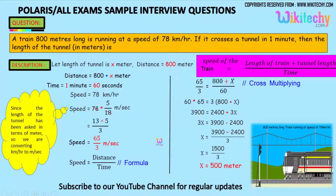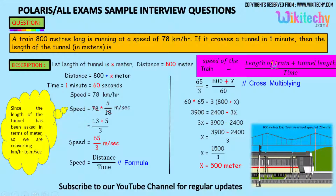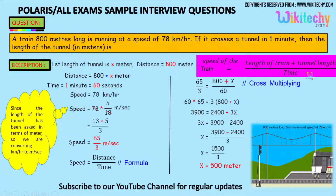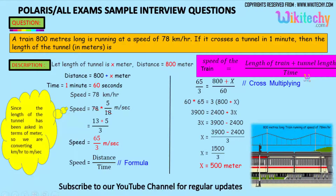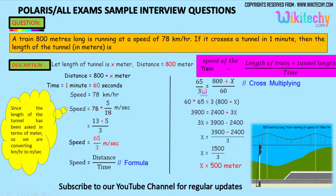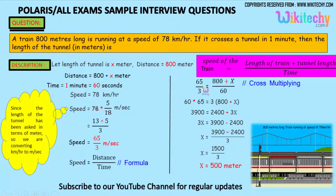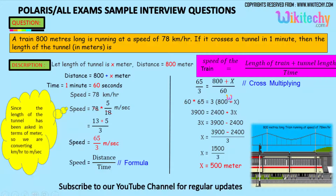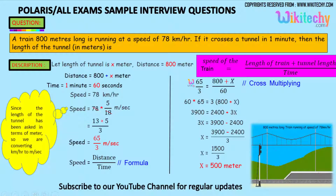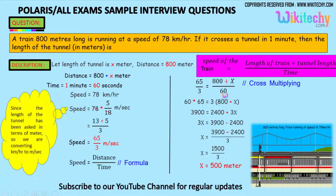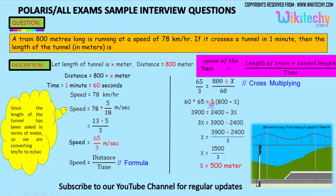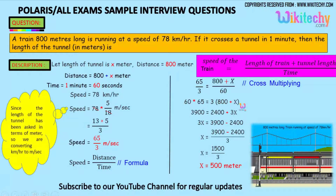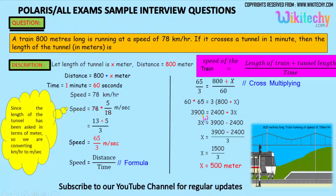The speed of the train equals the length of the train plus tunnel length divided by time. So 65 divided by 3 equals 800 plus x divided by 60. Cross multiplying: 60 into 65 equals 3 into 800 plus x, giving 3900 equals 2400 plus 3x.